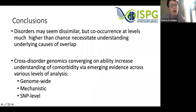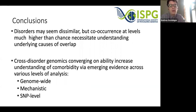In general, although our disorders may seem dissimilar in some respects — which has caused us to lump them into discrete categories — their co-occurrence at levels much higher than chance really requires us to understand the underlying causes of this overlap. Genomics offers a real opportunity to fill in major gaps in our understanding, because we can examine the full psychiatric space using methods that allow overlap to be examined in independent samples, and at multiple levels of analysis including genome-wide, mechanistic, and SNP-level analysis. With that, I'll just thank everyone for their time.